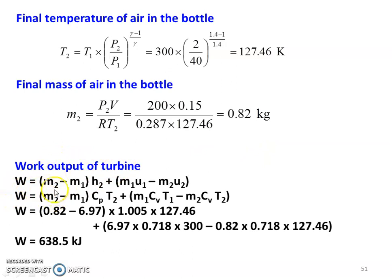Output of the turbine W equals (M2 minus M1) into H2 plus M1 U1 minus M2 U2. Substituting numerical values: (0.82 minus 6.97) times 1.005 times 127.46 plus 6.97 times 0.718 times 300 minus 0.82 times 0.718 times 127.46. The work produced by the turbine is 638.5 kilojoules.